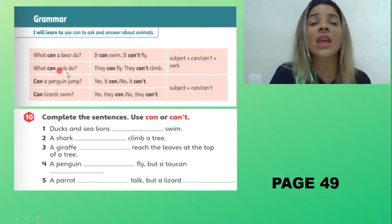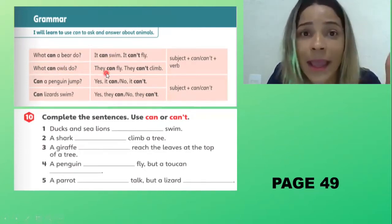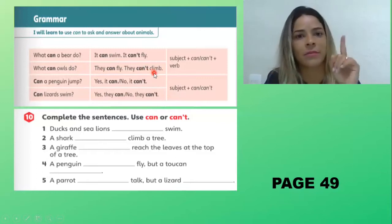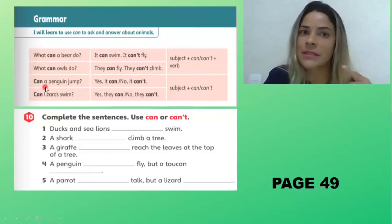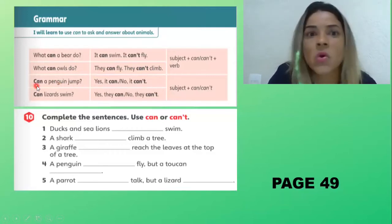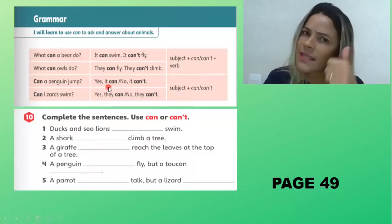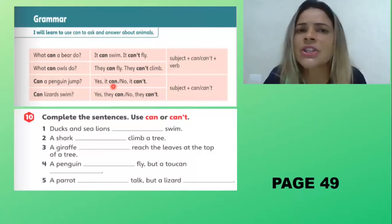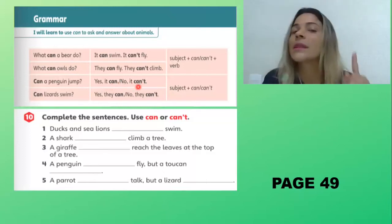Next sentence: 'What can owls do?' O que corujas podem fazer? 'They can fly' — elas podem voar. 'They can't climb' — elas, as corujas, não podem escalar. Next question: 'Can a penguin jump?' O pinguim pode ou consegue pular? Yes, it can — sim, ele consegue. Or no, it can't — não, ele não pode. Affirmative or negative.